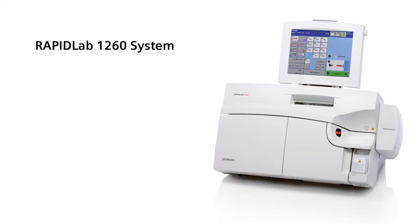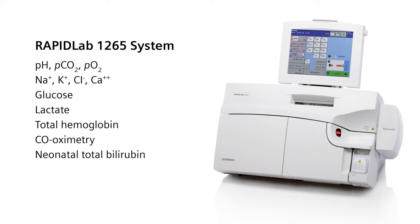The RapidLab 1260 includes all four electrolytes plus glucose and lactate in addition to the blood gas panel while the RapidLab 1265 system offers the full test menu including co-oximetry.